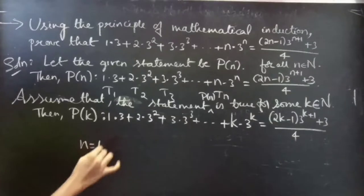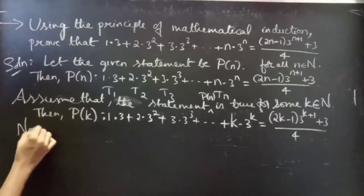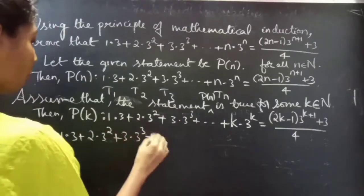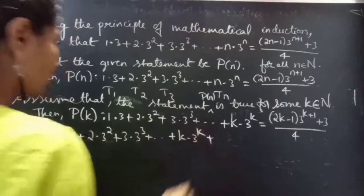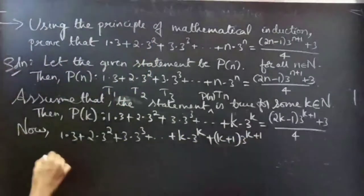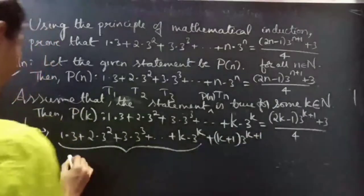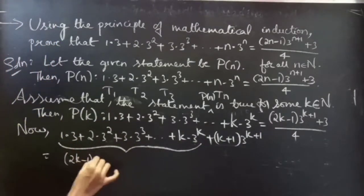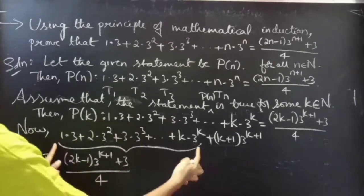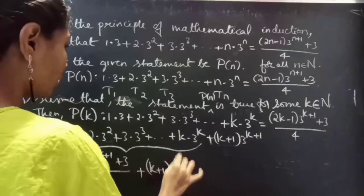Now we will prove for n=k+1, that is, we will take k+1 terms from the LHS: 1×3 + 2×3² + 3×3³ + ... + k×3^k + (k+1)×3^(k+1). This equals, since P(k) is true, (2k−1)×3^(k+1) + 3/4 + (k+1)×3^(k+1).